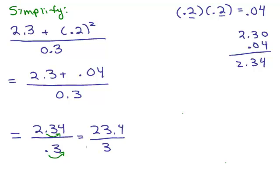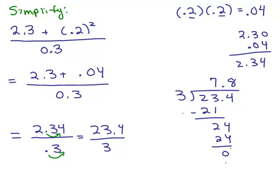So I have 23.4 over 3. That's what you get once you multiply numerator and denominator by 10. Now I can do my division. What is 3 into 23.4? The decimal point goes up here. 3 into 23 is 7, and I subtract so I can do 3 into 24 is 8, and it goes in evenly. So my answer here is 7.8.